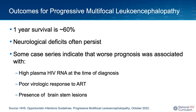With regard to outcomes, the one-year survival with a PML diagnosis is approximately 60%. Neurological deficits often persist. A worse prognosis is associated with high plasma HIV RNA at the time of diagnosis, poor virologic response to ART, and the presence of brainstem lesions.